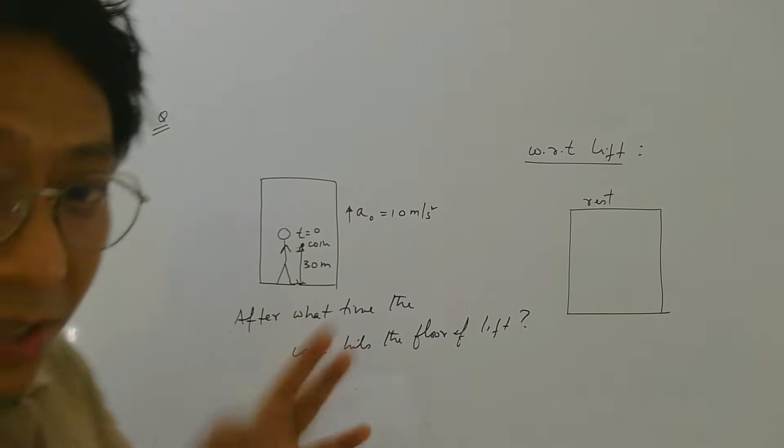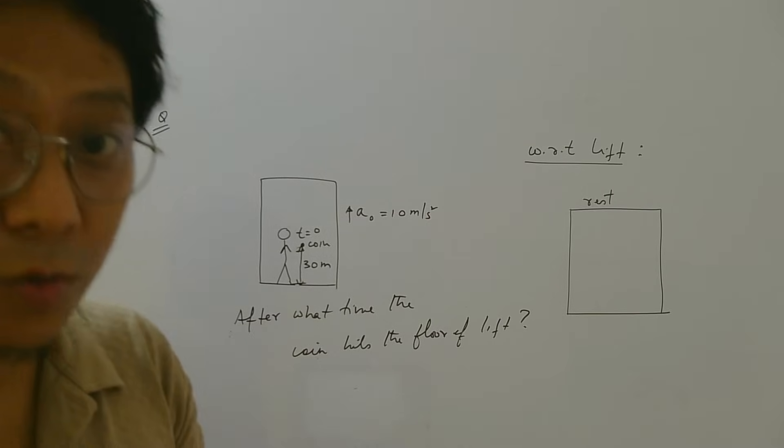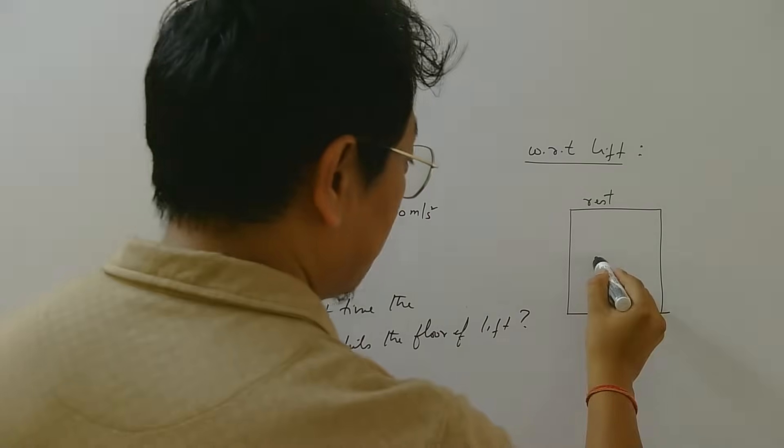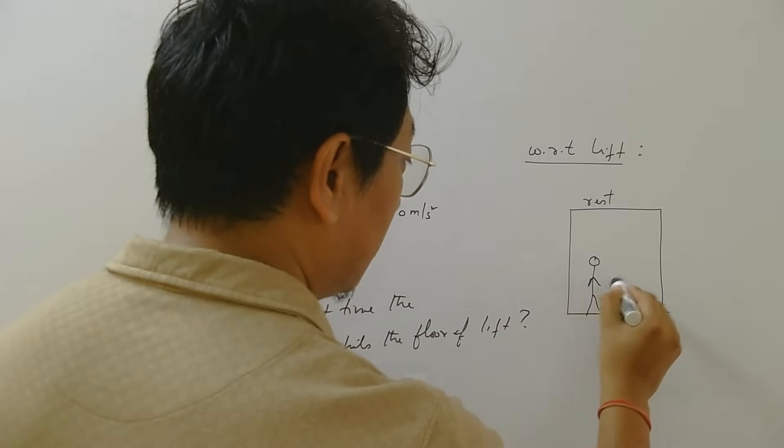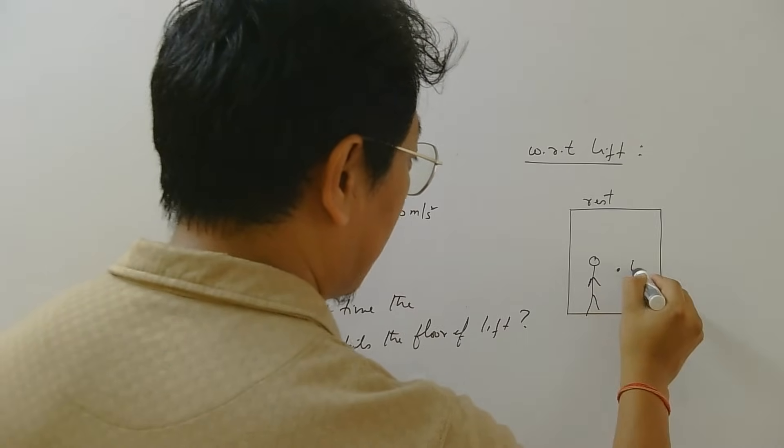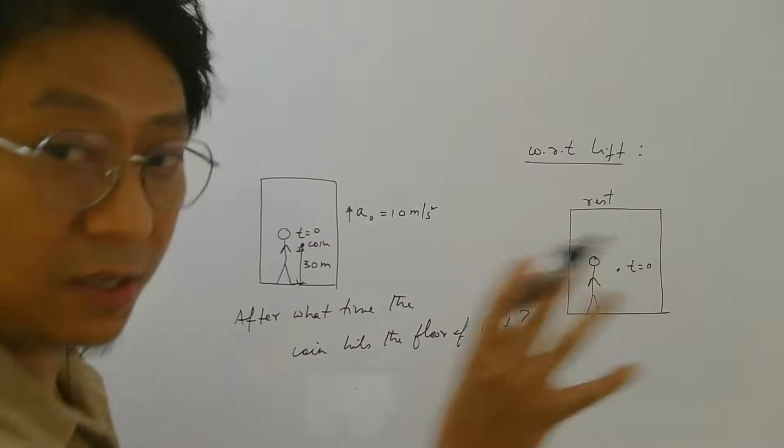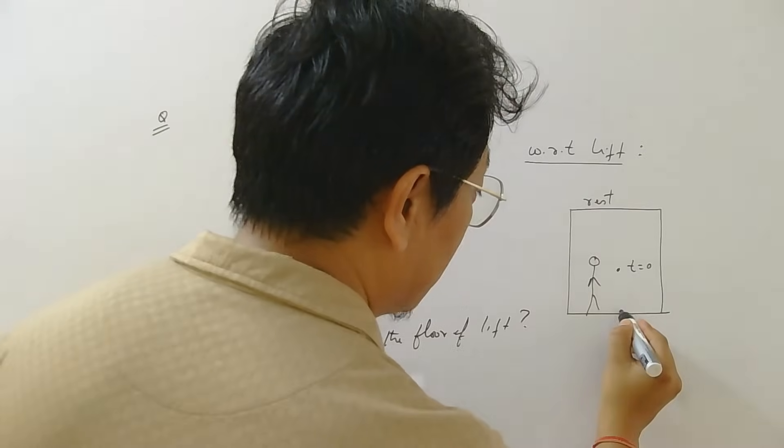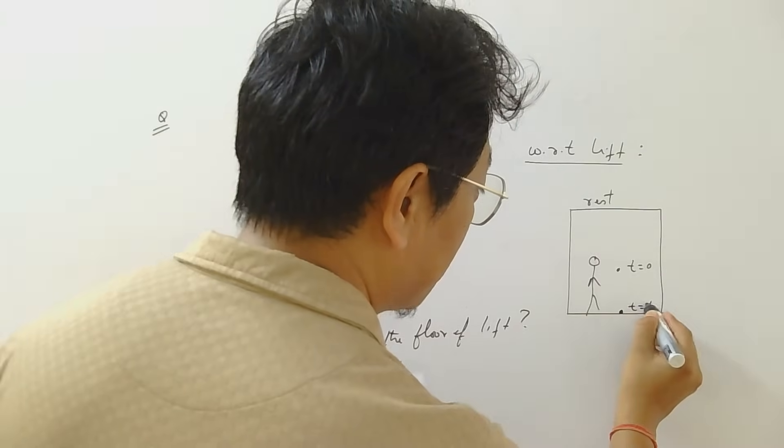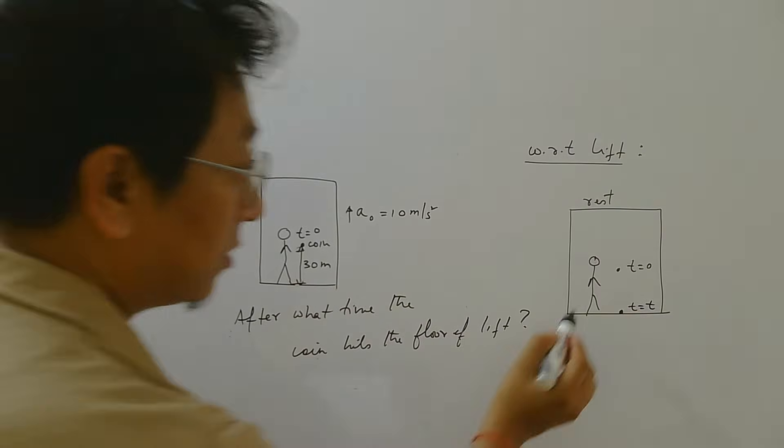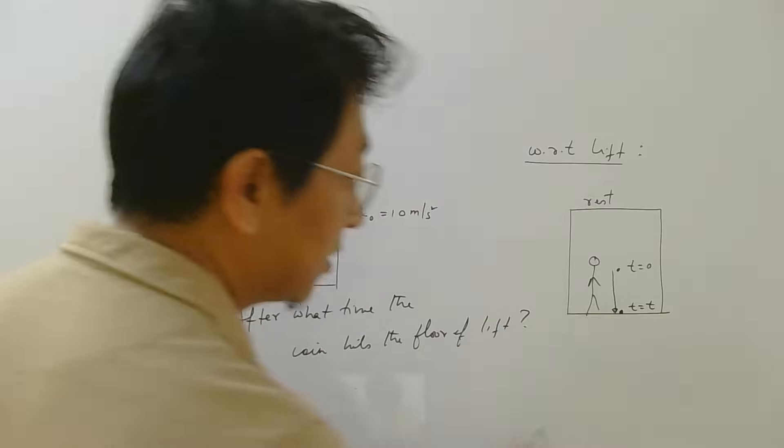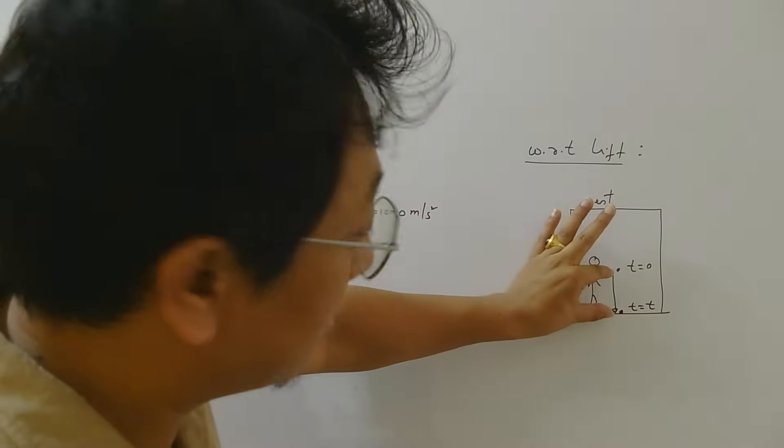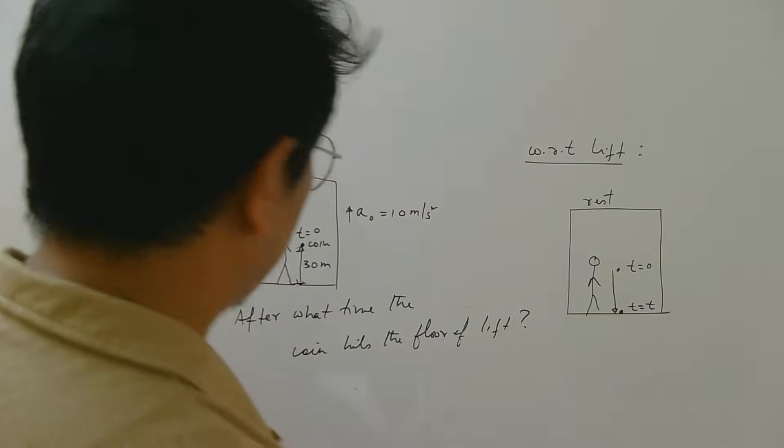However, everything now should be measured with respect to lift. So this person is not going to move. You will see the coin here at time 0 and when you release the coin, the coin reaches the floor after some time, so that time we want. So what is the displacement as seen by this person? Obviously, this person sees this much displacement right, so that is 30.